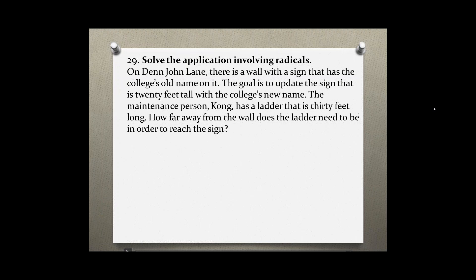Problem number 29. Solve the application involving radicals. On Dean John Lane there is a wall with a sign that has the college's old name on it. The goal is to update the sign that is 20 feet tall with the college's new name. The maintenance person Kong has a ladder that is 30 feet long. How far away from the wall does the ladder need to be in order to reach the sign?